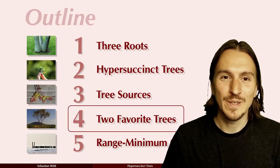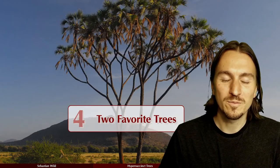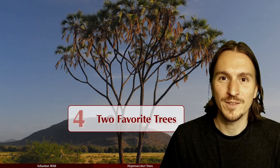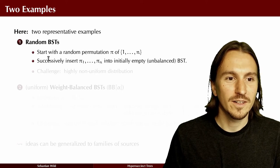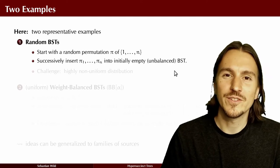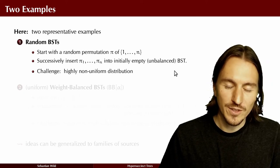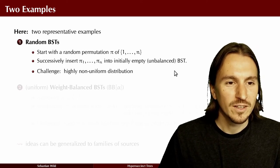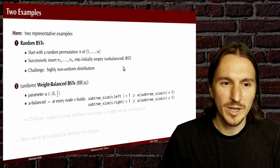In the next part I want to illustrate our analysis of hyper succinct trees on two specific families: random binary search trees and uniform weight-balanced trees. Random binary search trees start with a random permutation of numbers 1 up to n, then successively insert these numbers into an initially empty unbalanced binary search tree. It's an interesting distribution because it heavily favors balanced trees over high trees, so there's substantial compression to be achieved.